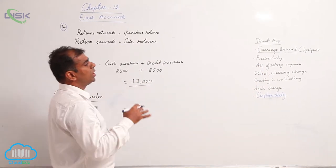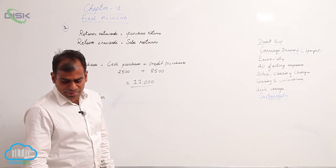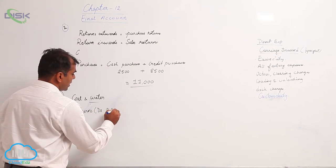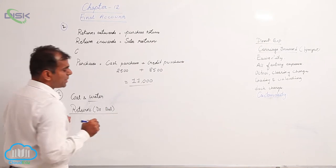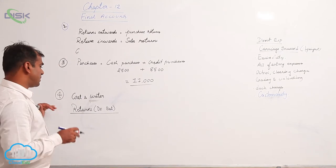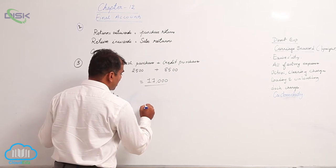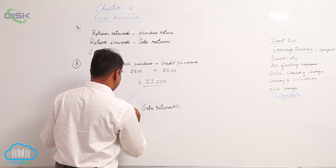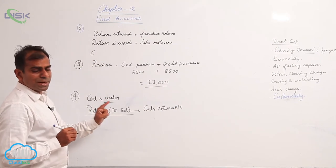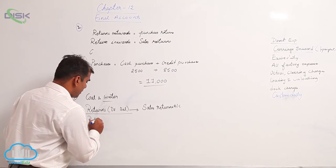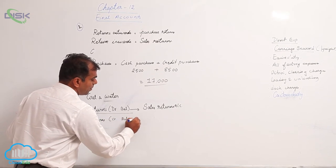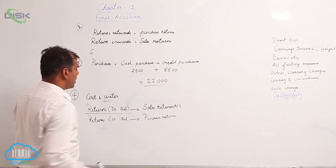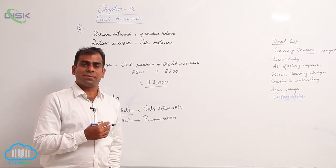Manufacturing expenses would also go to your trading account debit side. The next item is given as returns in bracket debit balance. This should either be purchase returns or sales returns. Recall your basic journal entries — returns debit, which return we write in the debit part of the journal entry: sales returns. So we know that sales returns account shows debit balance. Returns with a debit balance is nothing but sales returns, which should be deducted from sales. Similarly, returns showing credit balance is nothing but purchase returns, which has to be deducted from purchases. Always remember: sales returns shows debit balance, purchase returns shows credit balance.